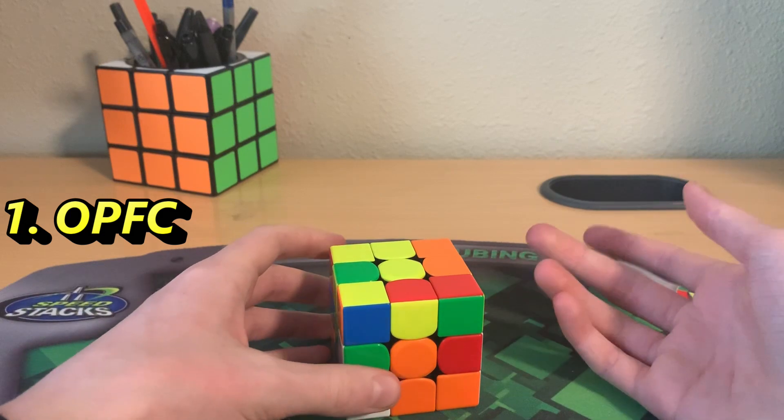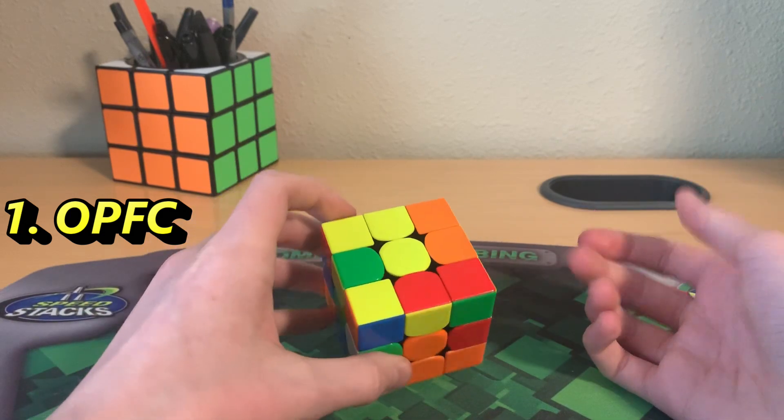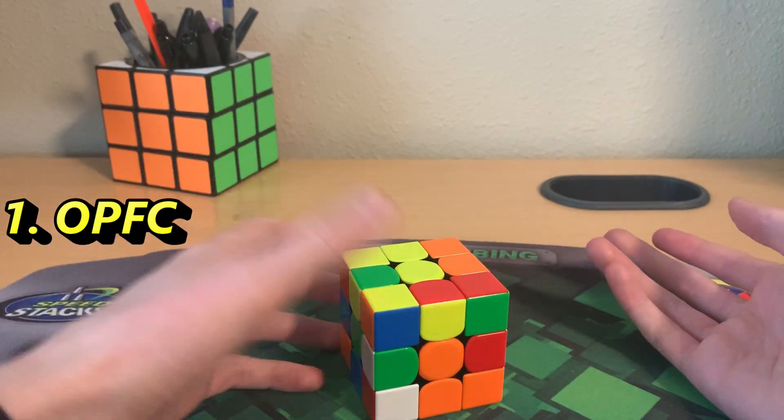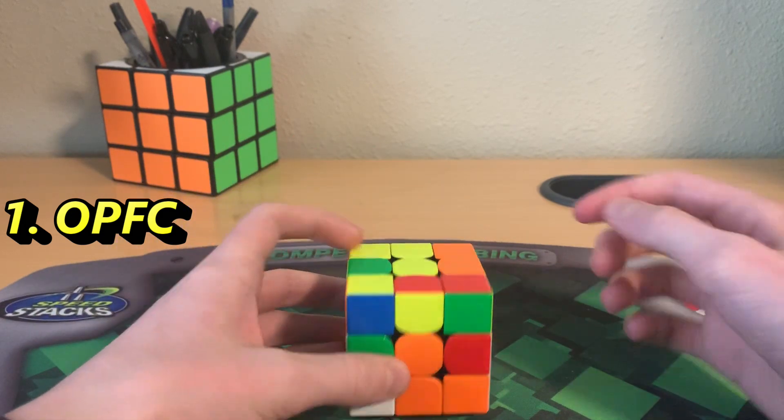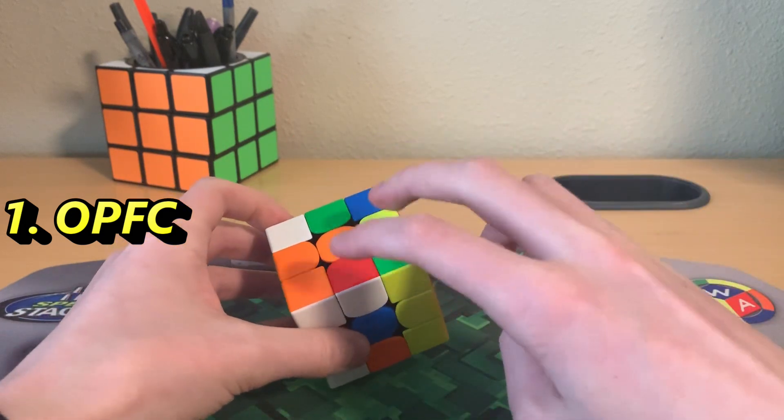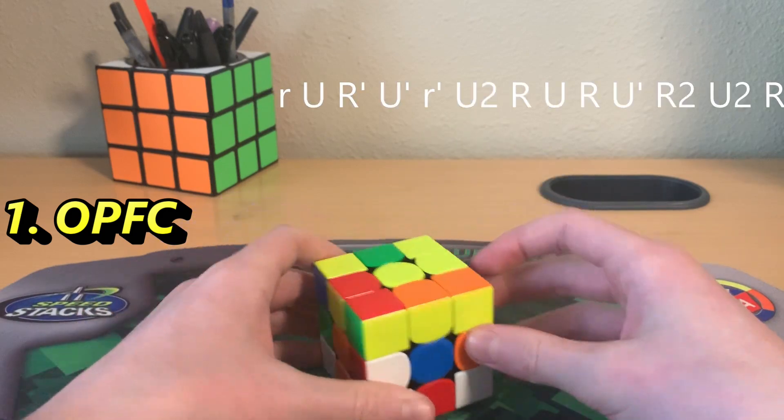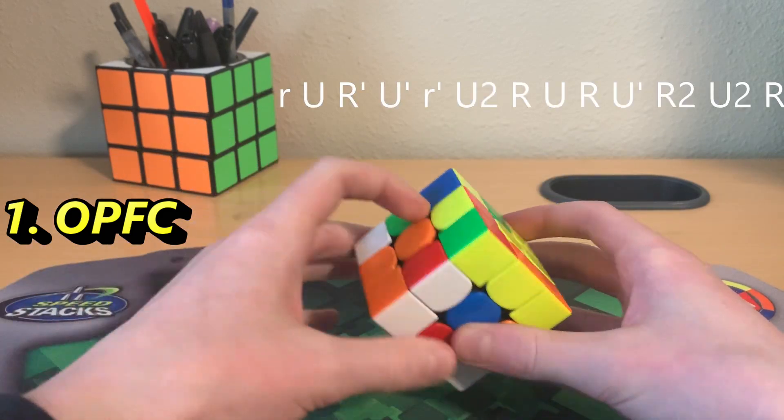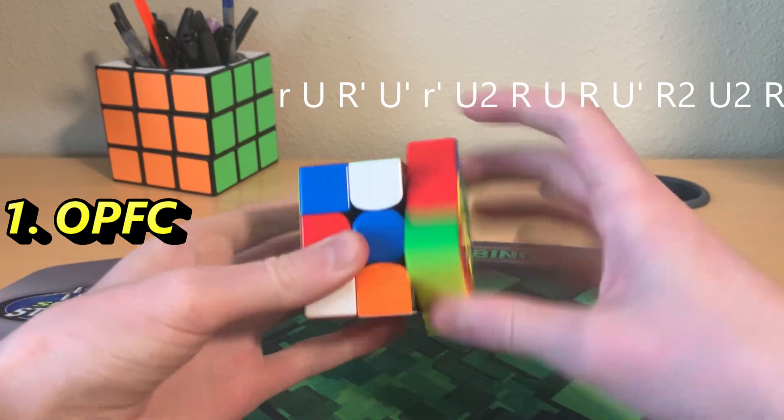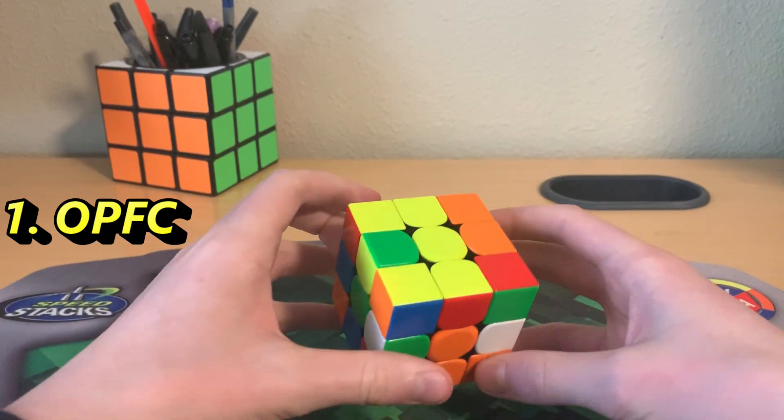But we do have parity. We have edge parity right now. So there's an algorithm that flips like these two edges. I'll put that right there. So if you flip these two, you'll no longer have the parity. So that should be good.